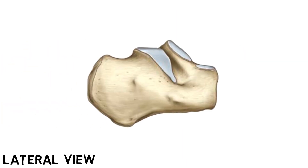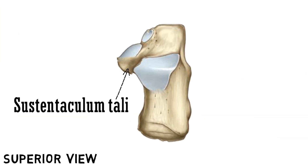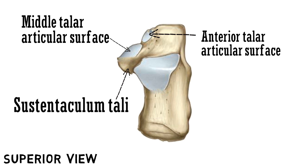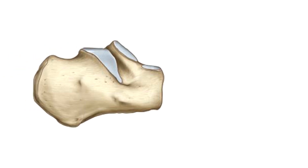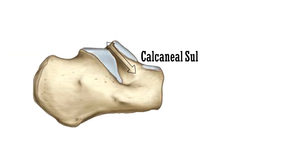This is the lateral view of the bone. The small elevation encircled is the fibular trochlea present on the lateral surface. Coming back to the superior view, these are the anterior, middle, and posterior talar articular surfaces. Lastly, this is the calcaneal sulcus that separates the middle talar articular surface from the posterior talar articular surface.